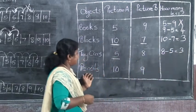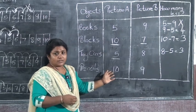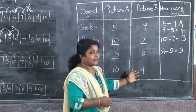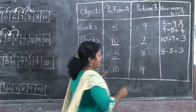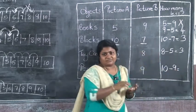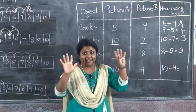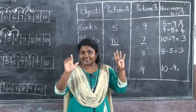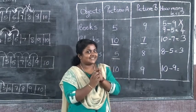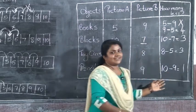The next one is pencils. In Picture A there are 10 pencils — you can count and check. In Picture B there are 9 pencils. So we write 10 minus 9. Fold 9 fingers: 1, 2, 3, 4, 5, 6, 7, 8, 9. The answer is 1. 10 minus 9 equals 1.